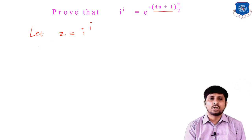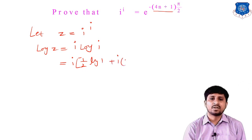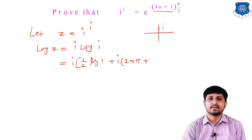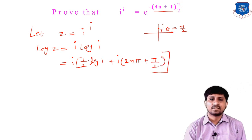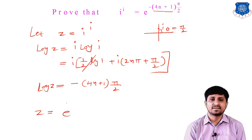So log z = i·log i. Using the general value: (1/2)log 1 + i(2nπ + π/2), since i lies on the positive y-axis so its principal argument is π/2. Since log 1 = 0 and i² = -1, we get -(2nπ + π/2). Taking LCM gives -(4n+1)π/2. Therefore log z = -(4n+1)π/2, so z = e^(-(4n+1)π/2).